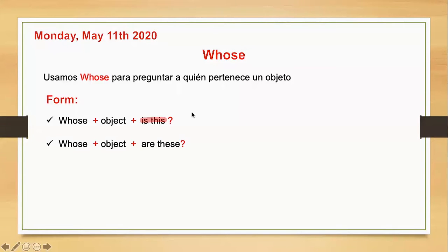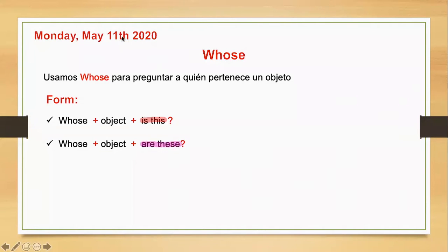And the other one is: whose + object + are these. Aquí tenemos el 'whose' que significa 'de quién', luego el objeto, y luego 'are these'. ¿Por qué aquí utilizo 'are these'? Porque estoy hablando de varios objetos. Entonces recuerden: si estoy preguntando por una sola cosa, voy a colocar 'is this'. Pero si estoy preguntando por varias cosas — libros, cuadernos, colores, papeles — voy a utilizar 'are these'.